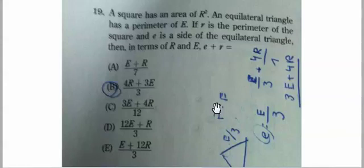An equilateral triangle — we do know all three sides are equal. We know that all three angles are equal also, but I don't think that's going to come into play in this question. So all three sides are equal.